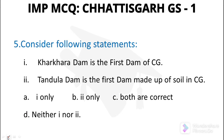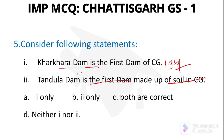Question number 5: Kharkhara Dam is the first dam of Chhattisgarh, and Tandula Dam is the first dam made up of soil in Chhattisgarh, built in 1913. However, Tandula Dam was the first dam made of soil, established in 1936. Both statements are not correct.